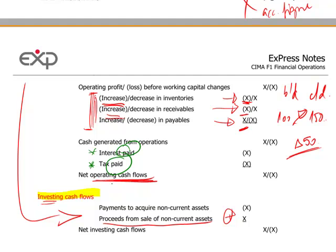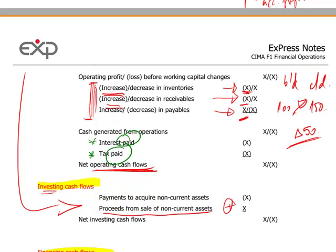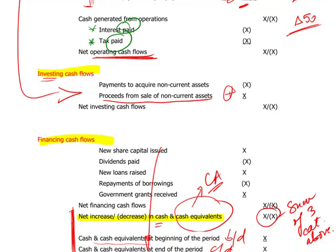The next section is investing cash flows, which captures cash flows from any investing activities. This includes both payments when you purchase non-current assets and receipts when you sell them, giving you a net investing cash flow. If you pull an annual report from a company's website, you can immediately see how much was invested in a given period. Even if the investing cash flows show a net outflow, this may indicate the company is making investments that will pay off in future years.